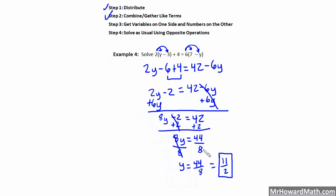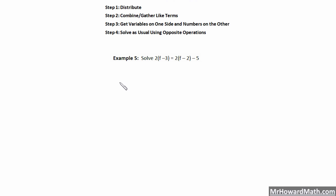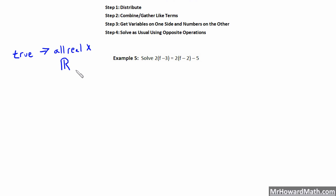Let's move on to example 5. Example 5 and example 6 are special cases. When solving equations with variables on both sides, there are two possible special cases that occur when our variables cancel out. If what we're left with is true, our answer is all real numbers, which we can also write with a capital R. If what we're left with is false, our answer is no solution.